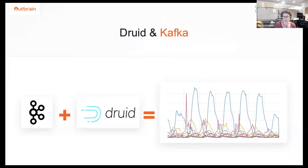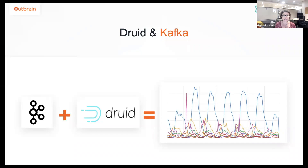We use Druid for real-time. Our services write events to Kafka, and since Druid has great integration with Kafka, we send our real-time data to Druid. We also use Pivot for visualization and for analytics.